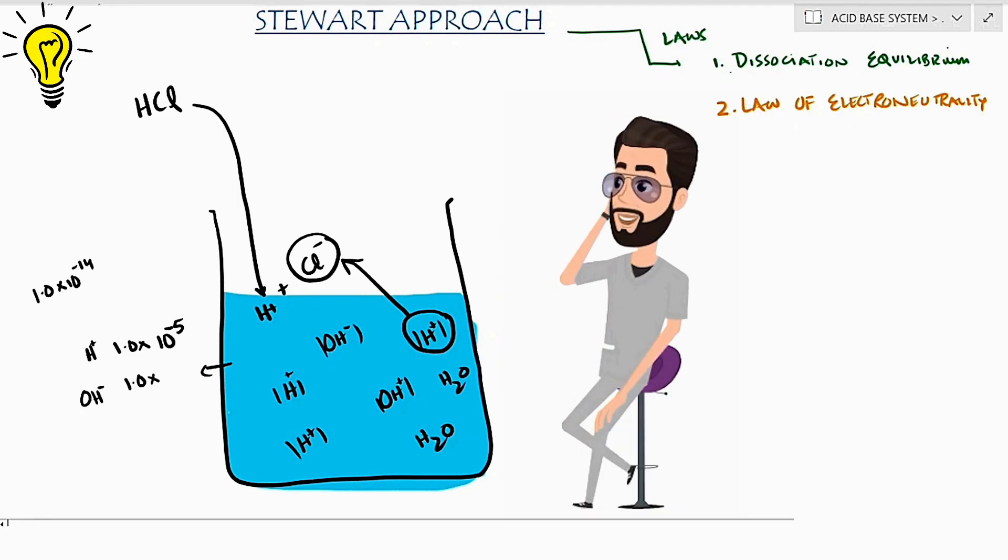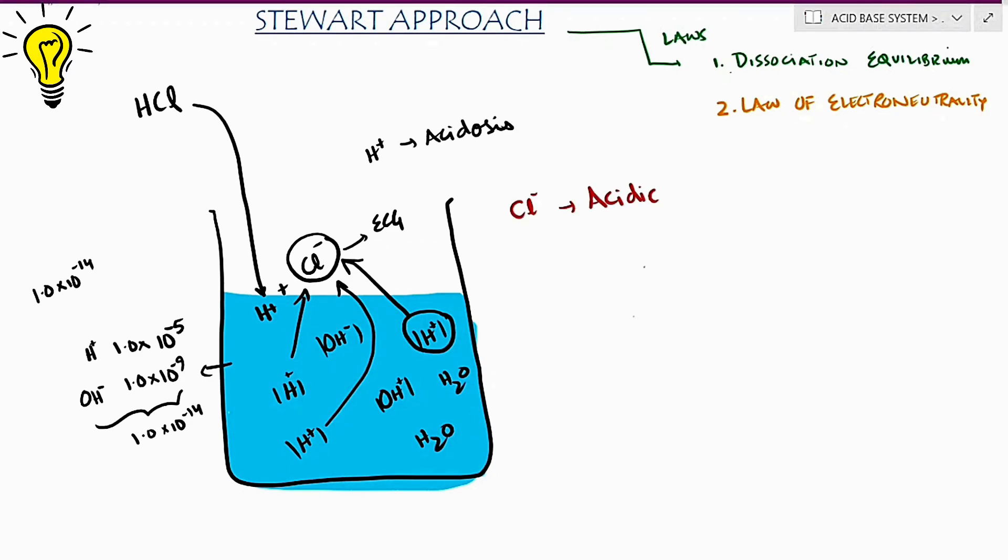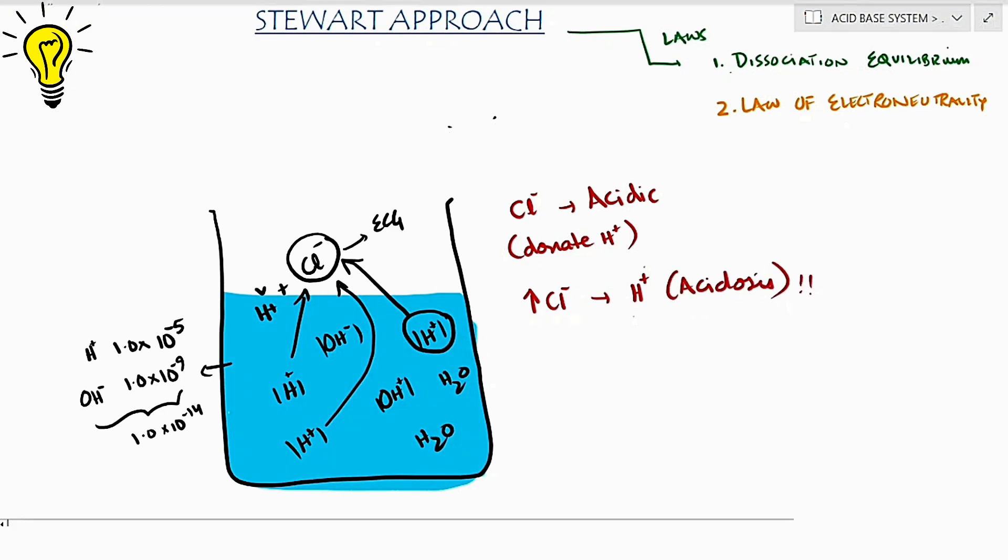This way, the sum of hydrogen and hydroxyl ions within the water would remain constant. So basically, the chloride or anion is acidic in nature since it derived hydrogen away from water and into the body. The more chloride you add to the body, the more hydrogen dissociation away from water and the more acidosis in the body. This explains how hyperchloremia causes acidosis.